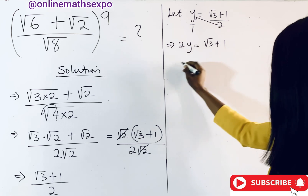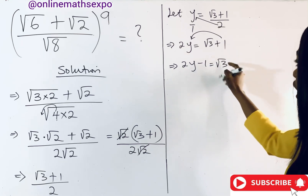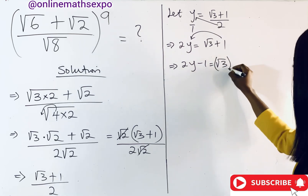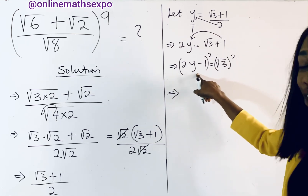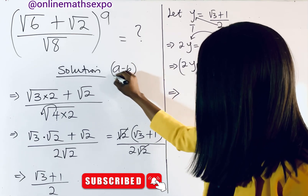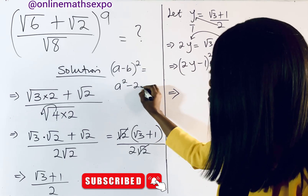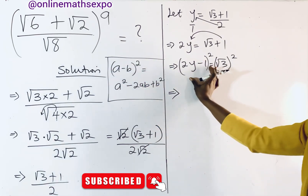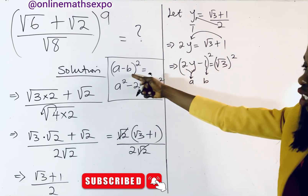From two y equals root three plus one, we rearrange to get two y minus one equals root three. To remove the radical sign, we square both sides. Recall the binomial formula: (a minus b)² equals a² minus 2ab plus b². Here, a is two y and b is one, which will guide our expansion.